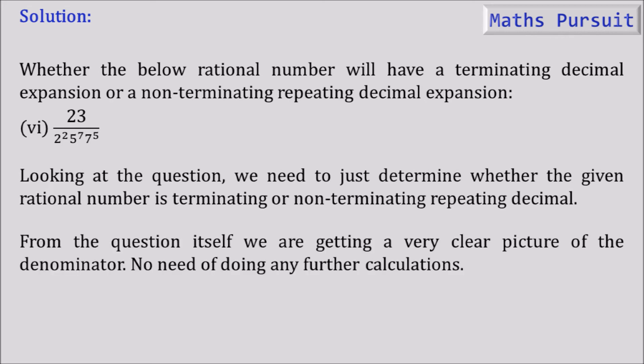From the question itself we get a clear picture of the denominator — no further calculations are needed, because for a rational number the denominator tells us whether it is terminating or non-terminating. From the theorems, if a rational number is terminating, its denominator must be of the form 2 to the power n and 5 to the power m. If it is not of that form, the number is non-terminating.